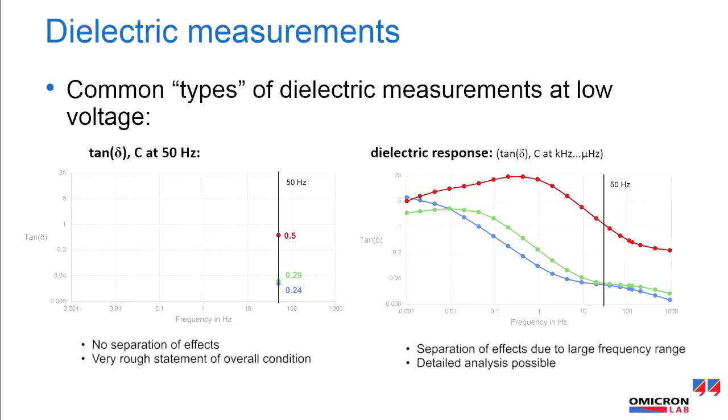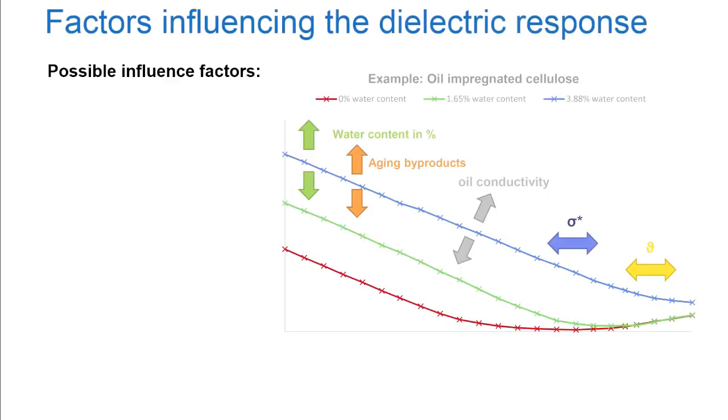With the dielectric response analysis, it can be easily seen that the green curve indicates that the dielectric material is aged in comparison to the blue curve. Many factors influence the dielectric response of a dielectric material such as temperature.